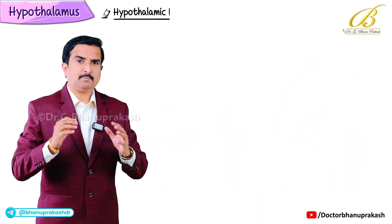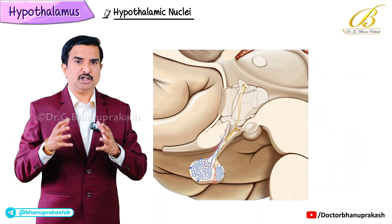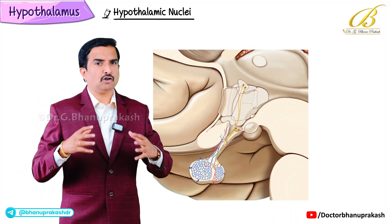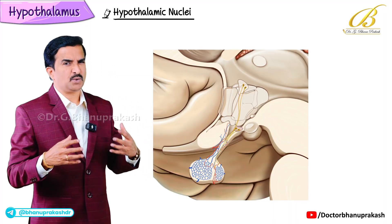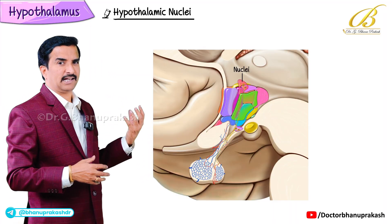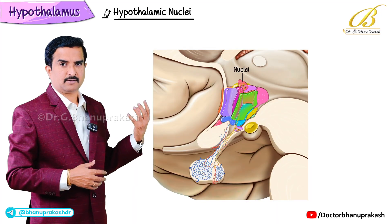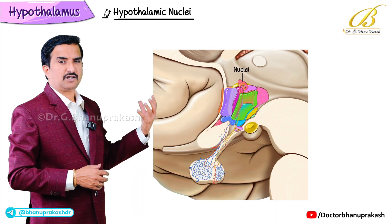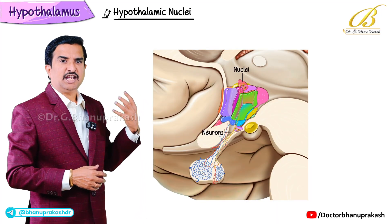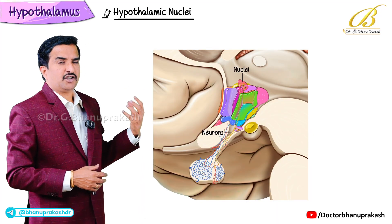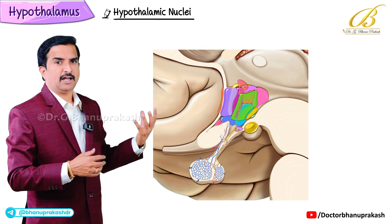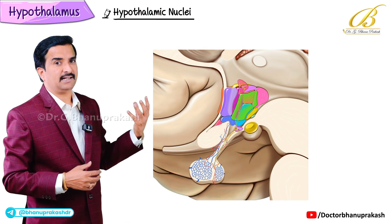Now let's discuss about the hypothalamic nuclei. The hypothalamus is organized into several nuclei — clusters of neurons each with distinct functions. Let's break them down.